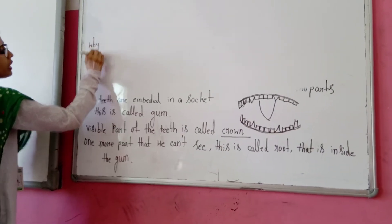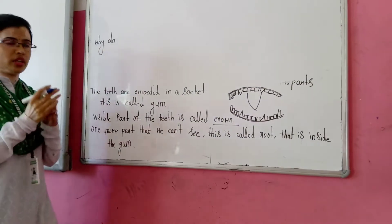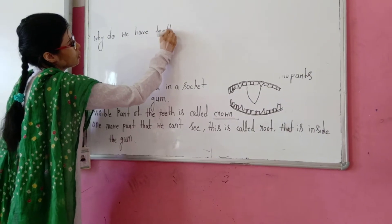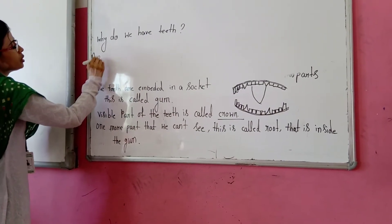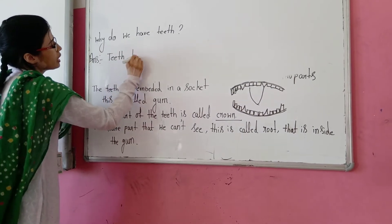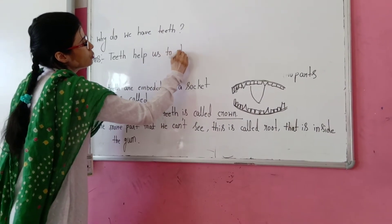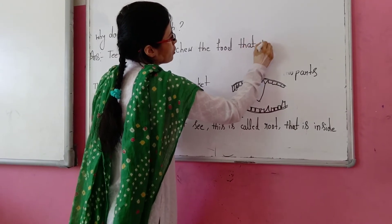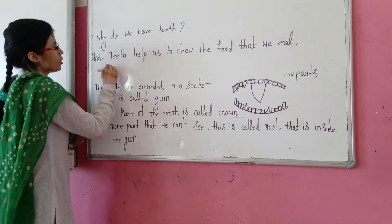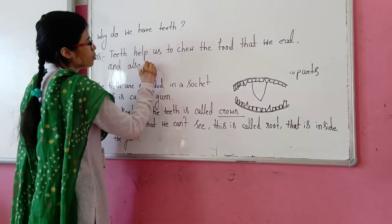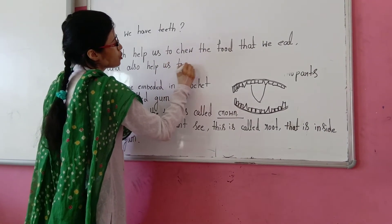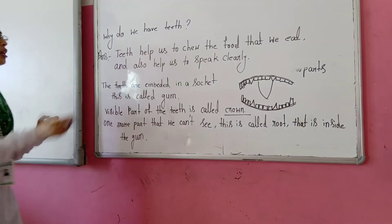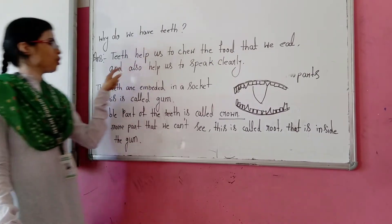Important question: why do we have teeth? Teeth help us to chew the food that we eat, and also help us to speak clearly. So the answer is: teeth help us to chew the food that we eat and also help us to speak clearly.